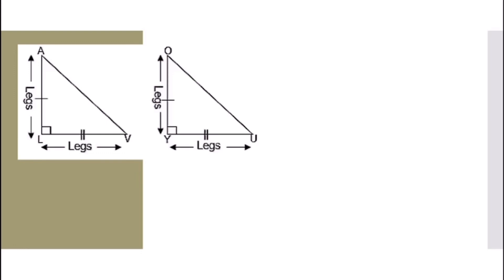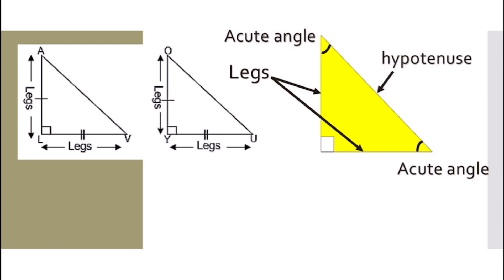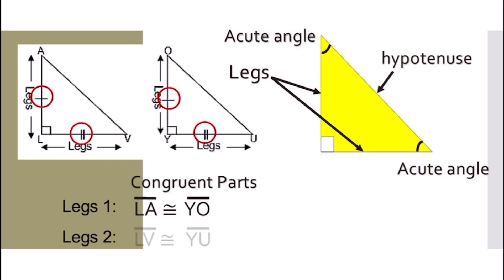Let's recall the parts of the right triangle. We have two legs, two acute angles, and the longest side is what we call the hypotenuse. For our example, the first pair of congruent legs: line segment LA is congruent to line segment YO, and line segment LB is congruent to line segment YU.